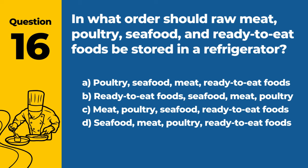Question 16: In what order should raw meat, poultry, seafood, and ready-to-eat foods be stored in a refrigerator? A. Poultry, seafood, meat, ready-to-eat foods. B. Ready-to-eat foods, seafood, meat, poultry. C. Meat, poultry, seafood, ready-to-eat foods. D. Seafood, meat, poultry, ready-to-eat foods. Answer: B. Ready-to-eat foods, seafood, meat, poultry. Ready-to-eat foods should be stored above all raw items, with seafood, meat, and poultry stored below in that order to prevent cross-contamination.